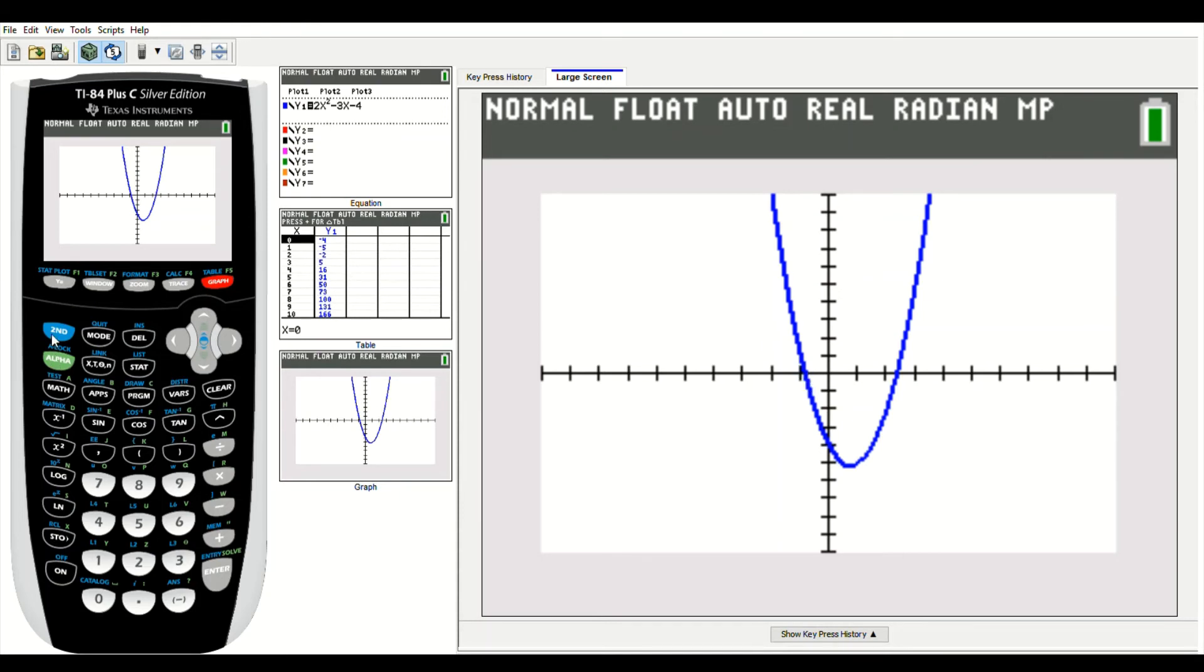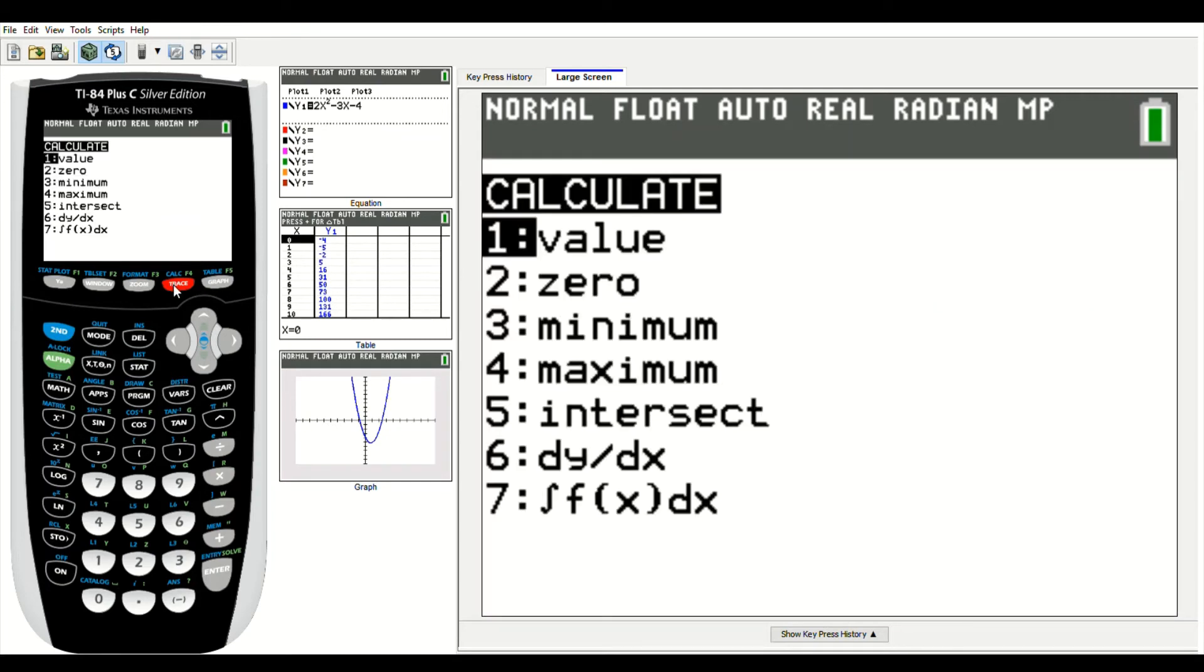So when I'm finding a solution or root using my calculator, we're in graph. And anytime I want my calculator to calculate something while I have graphed it, I'm going to go to this blue calc above the trace key. So it's a second function, so I'm going to press the second button first, and then I'm going to go to trace. We're going to tell our calculator to calculate something on our graph. We want it to calculate the zero. So that's how it's written on your calculator. So I'm going to go to 2.